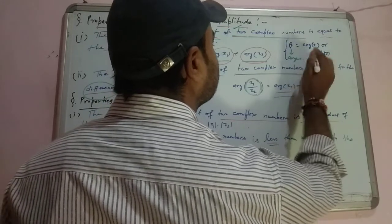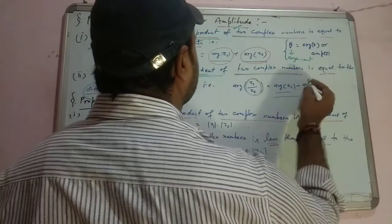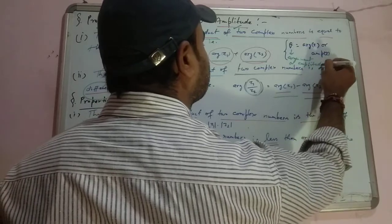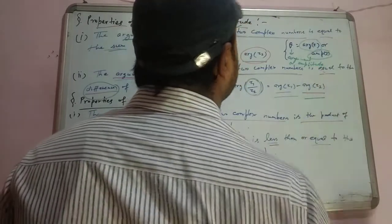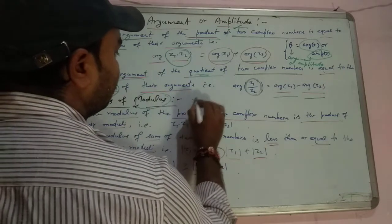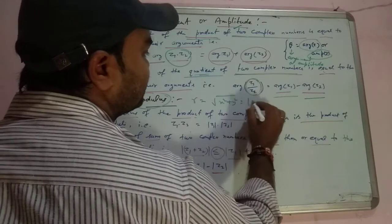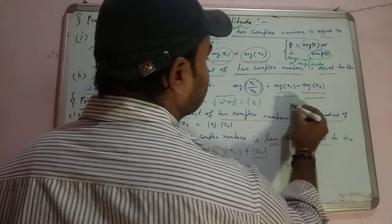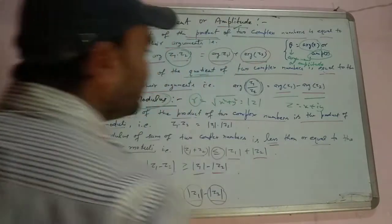This is an argument or amplitude denoted as argument z or amplitude z. The modulus in polar form R is equal to x squared plus y squared which equals mod of z. This is the modulus of any complex number z which equals x plus iy.